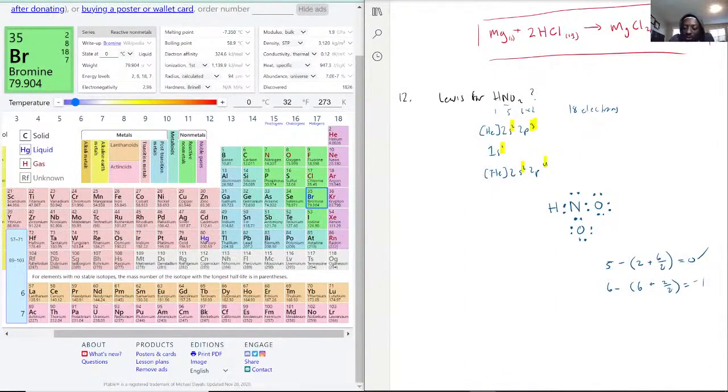What we have to do first is check the amount of electrons. It's supposed to be 18. We have 2, 4, 6, 8, 10, 12, 14, 16, 18, 20. We have two more electrons than we're supposed to have.